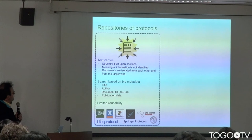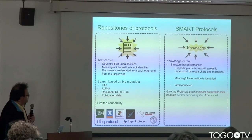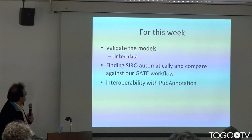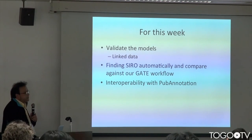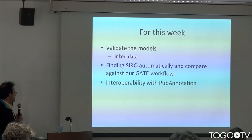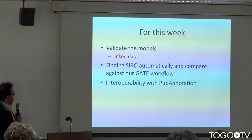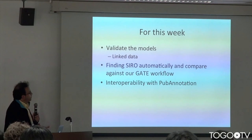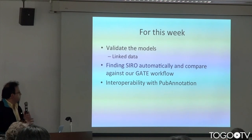What we want to do at the end of this is move from a text-centric repository of protocols into something more knowledge-based. We want to support the kind of queries I have just mentioned. We want to validate our linked data models and find SIRO automatically and compare that against our GATE workflow, which is what we currently have — we use GATE for discovering SIRO automatically. This is something I started to work on last year but couldn't finish. I want to have interoperability between my annotation system, which is built on Hypothesis — a very generic annotation system — and PURL annotation.